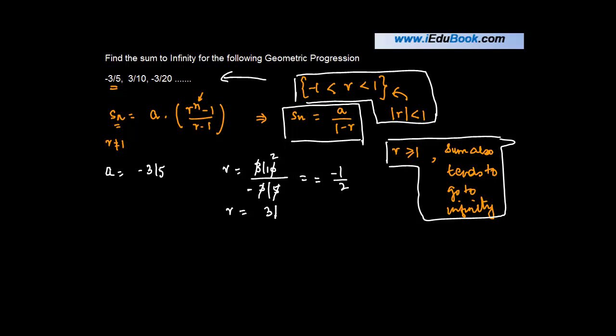If we take the second case, we get 3 upon 20 divided by 3 upon 10. Again, this will knock off this. This 10 will give you 2, minus 1 upon 2.